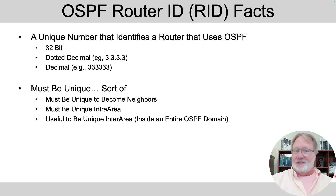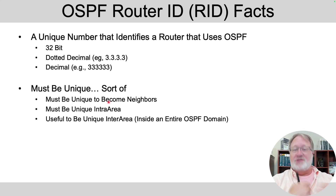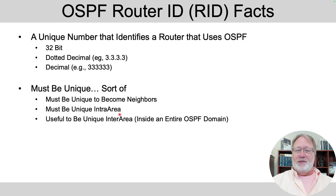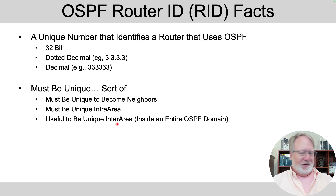So what is an OSPF router ID? It's a 32-bit number. We'll see them as dotted decimal numbers mostly, or as a plain decimal. The numbers we choose must be unique. Two routers won't become neighbors if they use the same router ID — that's an absolute. They must also be unique intra-area, meaning two routers in the same area can't use the same router ID value. So basically, if you run OSPF in your company, make your router IDs unique.